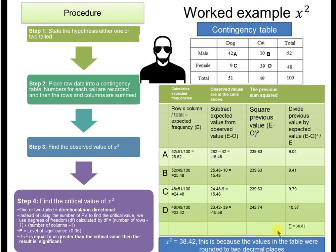The final act is to sum the lots. You just add up each of those. And we come up with a chi-squared of 38.42. We've rounded it to two decimal places.